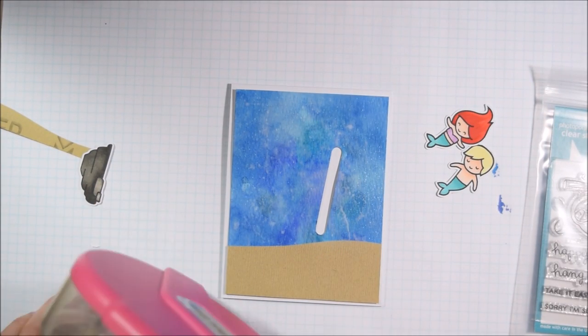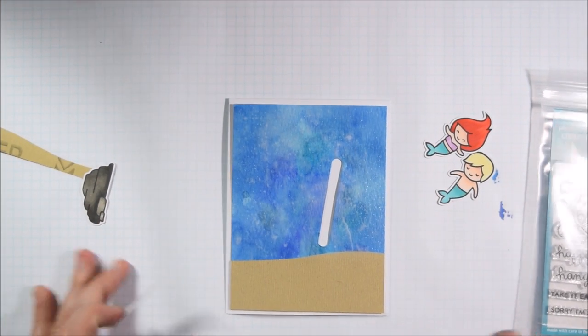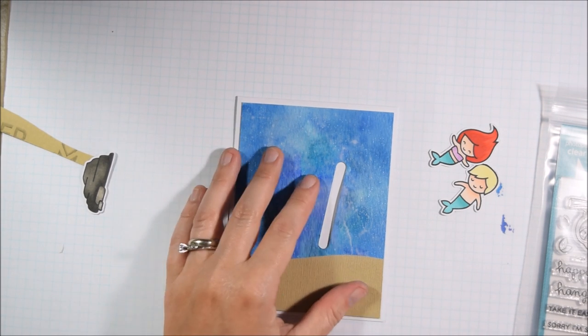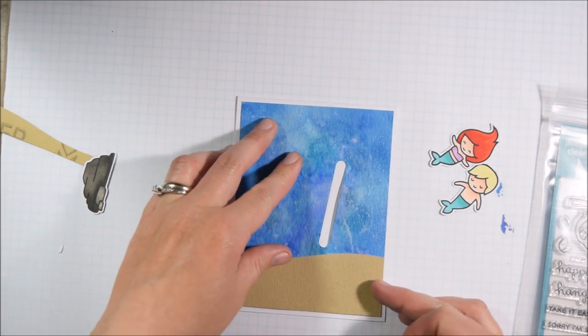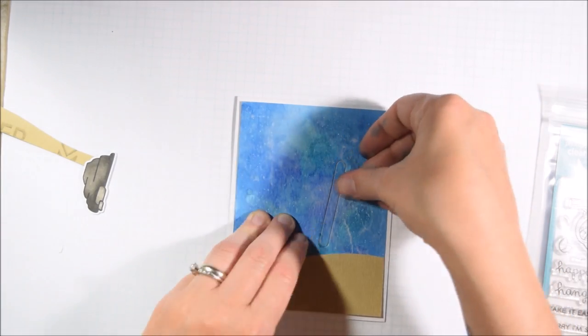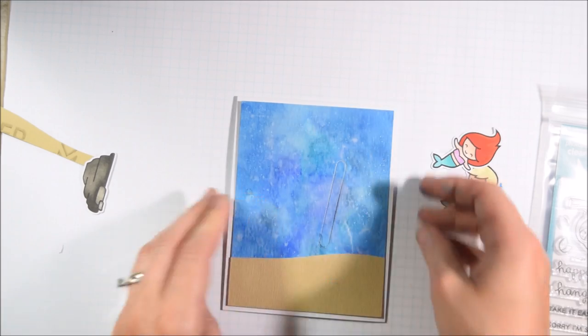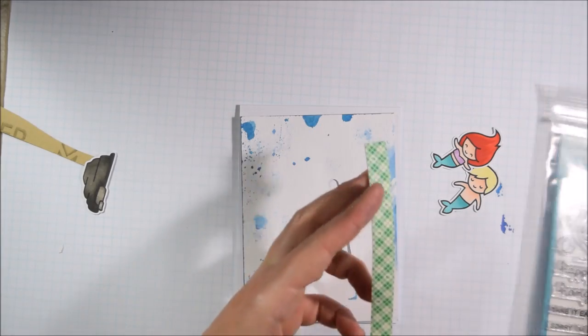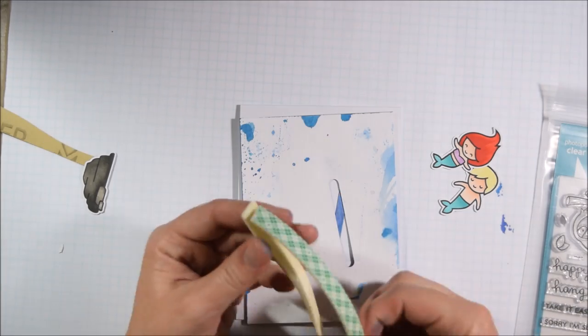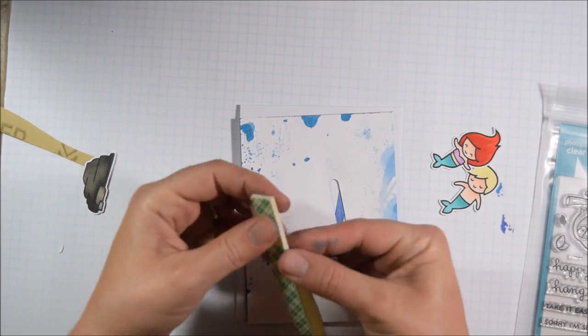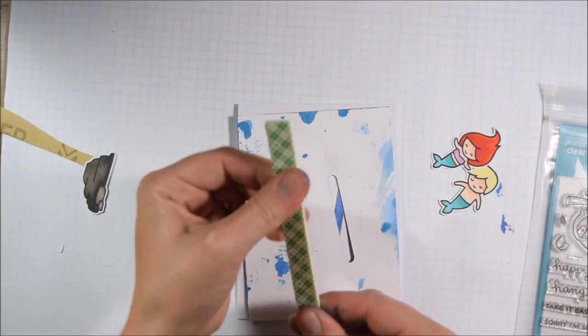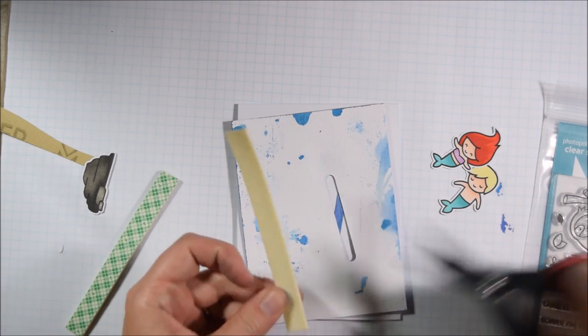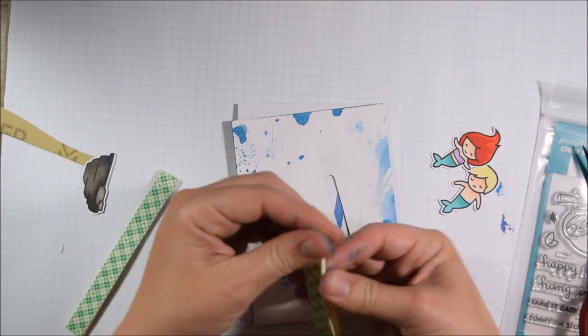I taped down the slider die from Lawn Fawn and ran it through my die cut machine. Then I'm going to take the rectangle slider piece that was cut out. I'm going to put my panel down on the card base, and then tape that little slider piece into place. That way, when the mermaid is sliding, it still appears to be pretty much one continuous background.